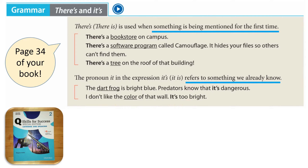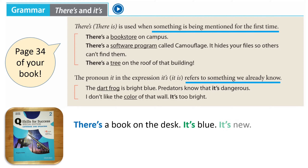Have a look at this picture. We might say: there is a book on the desk. It's blue. It's new. It's mine. So in the first sentence we introduce the subject — the book — with 'there is a book on the desk', and then 'it' refers to the book.